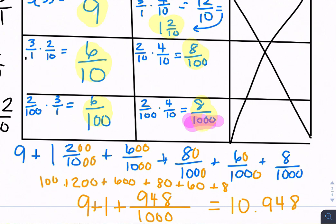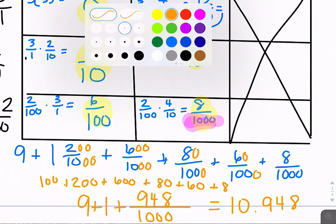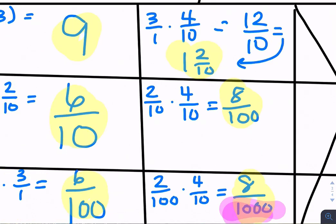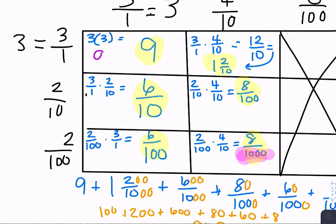You could also have done it this way and changed them into decimals in your generic rectangle. So this would still be 9. 6 tenths is really written like that. 1 and 2 tenths would be 1.2. 8 hundredths would be 0.08. And then 8 thousandths would be 0.008.